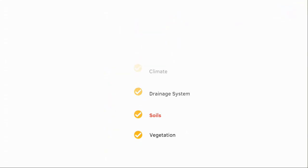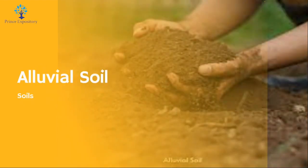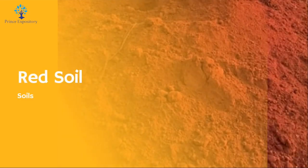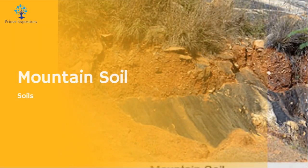Soils include alluvial soil, red soil, black soil, and mountain soil. Alluvial soil is predominant in the Indo-Gangetic Plain and is fertile and ideal for agriculture. Red soil is found in the Deccan Plateau and is rich in iron, tending to be less fertile. Black soil, also known as regur soil, is found in the Deccan Plateau and is highly fertile for cotton cultivation. Mountain soil in the Himalayan region is characterized by the presence of forest soils at higher altitudes.